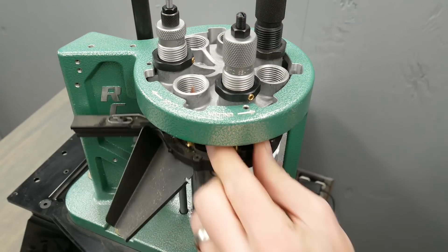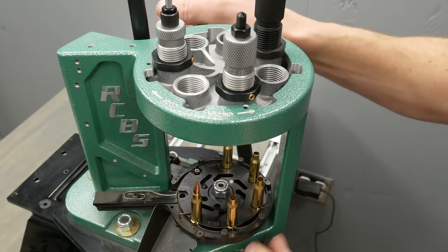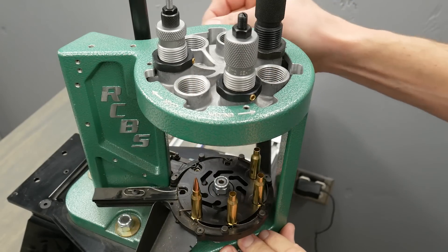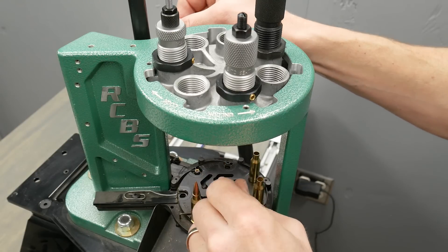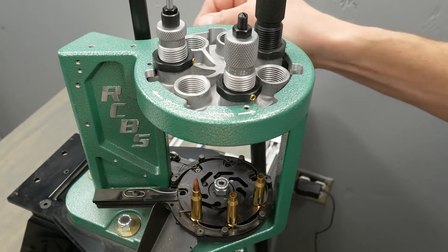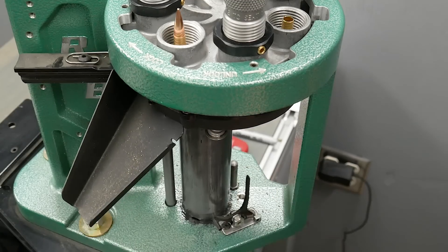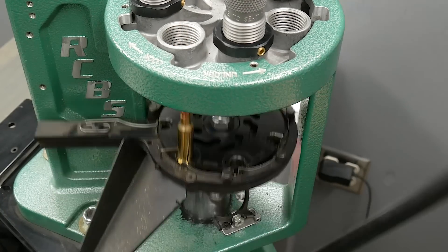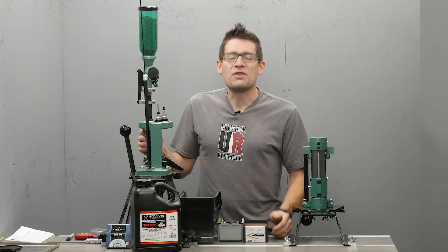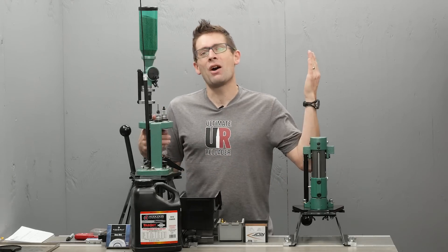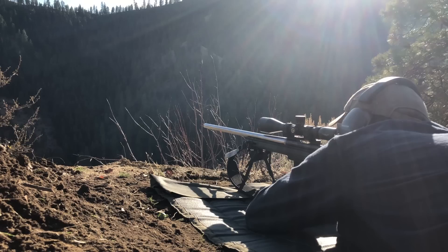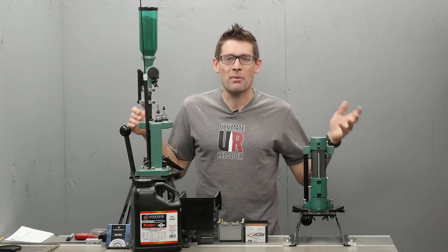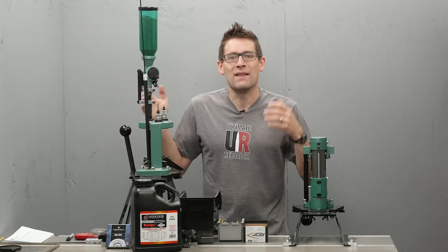Let's go ahead and run the press down. So as you can see, with a press like the Pro Chucker 7, we can kick out a lot of rounds per hour, and that's good because I'm shooting a lot. I just finished my 600-yard range. I'm doing a lot of load development at 100 yards. We're going to be going out to beyond 1,000 yards. I've got a semi-auto and a bolt gun to feed. I need lots of ammo, and this is a great setup for that.